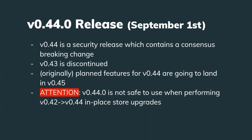The v4.4 release went out September 1st. This was a security release which contains a consensus break and change. This release went out as a fix for the 4.3 release, and 4.3 is discontinued. Chains that are upgrading will need to upgrade to the 4.4 release. When performing the upgrade, it needs to happen directly to the 4.4.1 release, which went out today. There were no new features added — this was simply a security release.